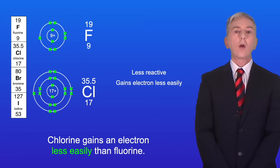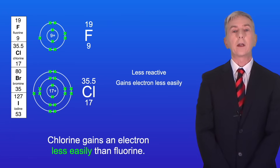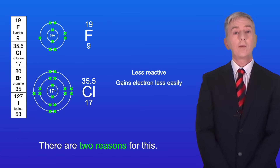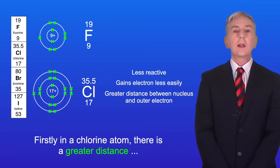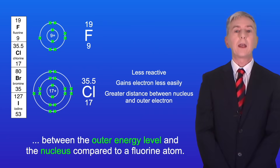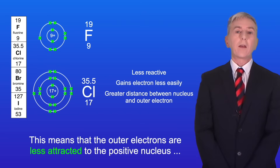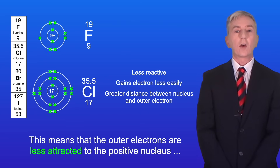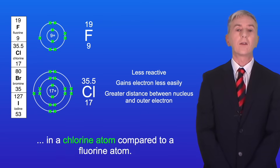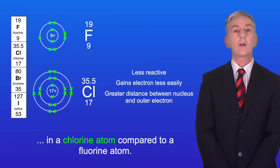Chlorine gains an electron less easily than fluorine, and there are two reasons for this. Firstly, in a chlorine atom there's a greater distance between the outer energy level and the nucleus compared to a fluorine atom. This means that the outer electrons are less attracted to the positive nucleus in a chlorine atom compared to a fluorine atom.